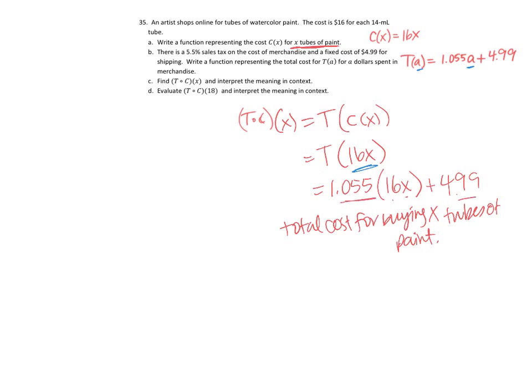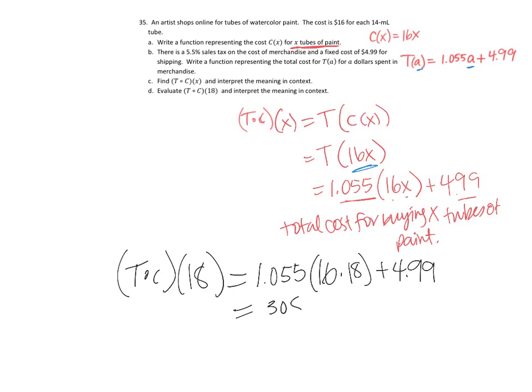Then I want to evaluate T of C of 18, so I can just plug it into the function: 1.055 times 16 times 18 plus 4.99. So I can compute that in my calculator: 1.055 times 16 times 18 plus 4.99, and I get $308.83.